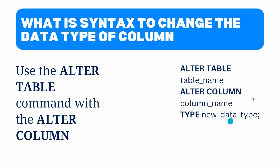Now look at the syntax. First we specify the ALTER TABLE command, then we specify the table name. After that we specify the ALTER COLUMN command, then we specify the column name. And after that we specify TYPE, followed by the new data type of that column.